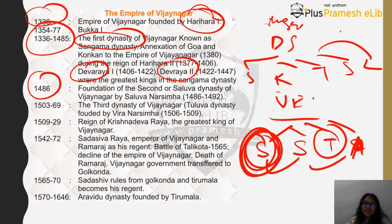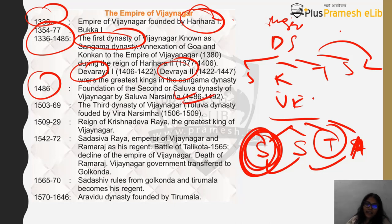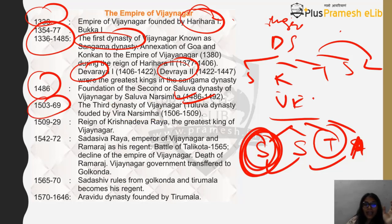In 1486 started the second dynasty of Vijayanagara — the Saluva Dynasty, started by Saluva Narasimha. Then the third dynasty, the Tuluva Dynasty, started around 1506 AD, founded by Veer Narasimha. The second ruler of the Tuluva Dynasty was Krishnadevaraya, the greatest ruler of Vijayanagara.